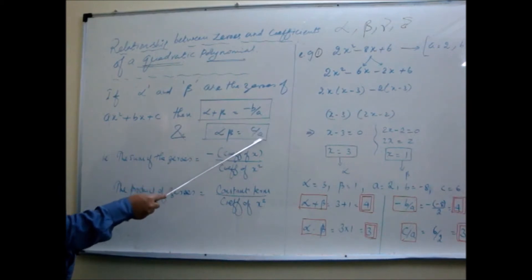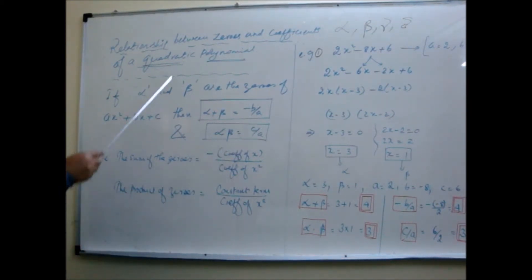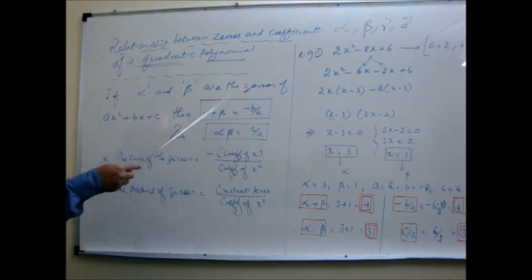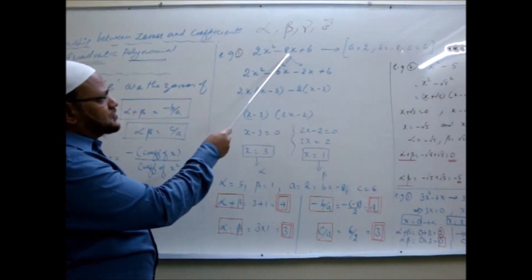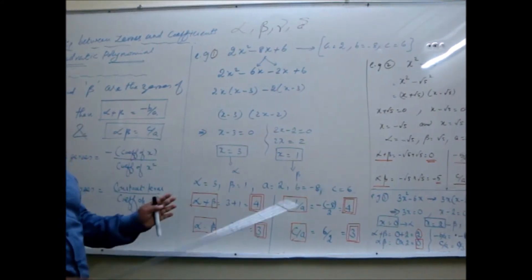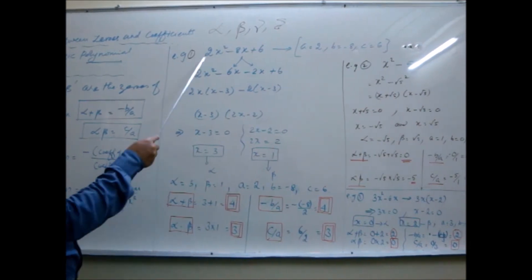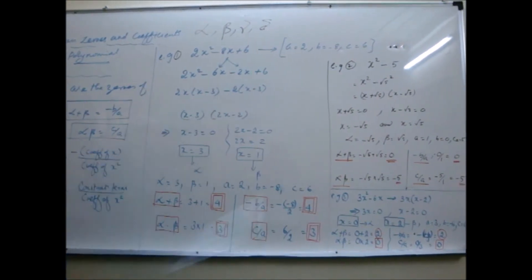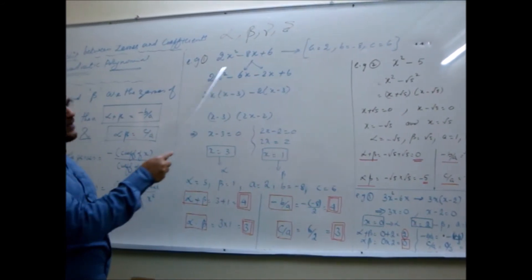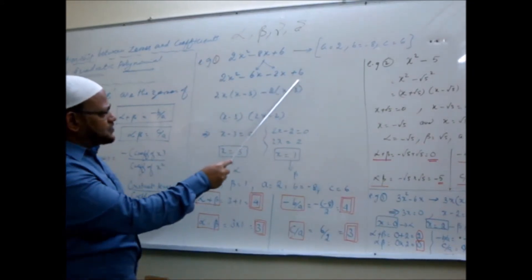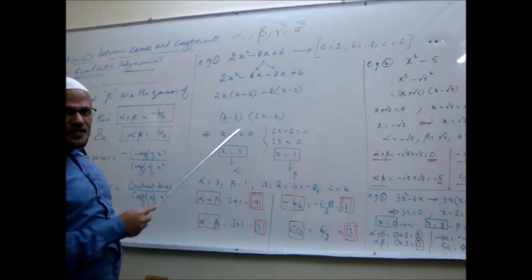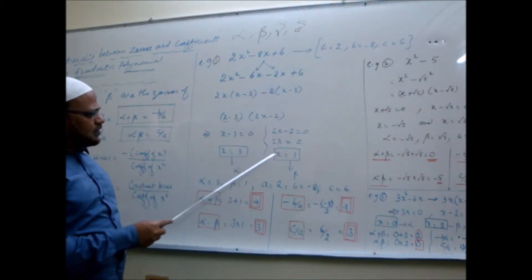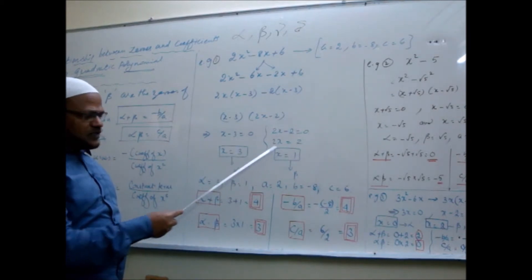The sum of zeros α + β equals minus of the coefficient of x divided by the coefficient of x². The product α × β equals the constant term divided by the coefficient of x². This is the relationship between the zeros of a quadratic polynomial and its coefficients. Let's see the examples — I have taken 2x² - 8x + 6. Factorizing using the splitting middle term method, we get two linear factors: (x - 3) and (2x - 2). Equating each to zero gives x = 3 and x = 1 — the two zeros.